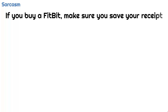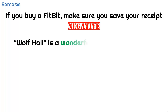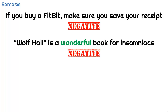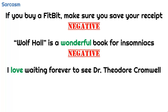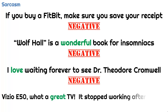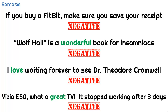The sentiment of sarcasm is often very hard to determine. 'If you buy a Fitbit, make sure you save the receipt.' We know this is a negative statement, but can an algorithm read through this sarcasm and figure that it is negative, even though it doesn't contain a negative word? 'Wolf Hall is a wonderful book for insomniacs.' Here's a negative statement with a positive sentiment word. 'I love waiting forever to see Dr. Theodore Cromwell.' This is a negative statement about waiting a long time to see your doctor, but it contains the sentiment word 'love.' 'Vizio E50. What a great TV. It stopped working after three days.' Another negative sentiment inside sarcasm that contains a positive sentiment word.